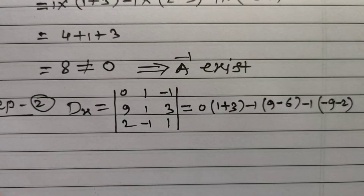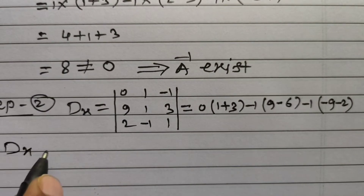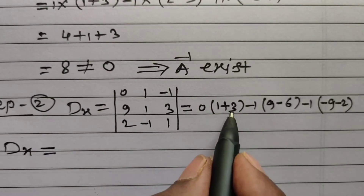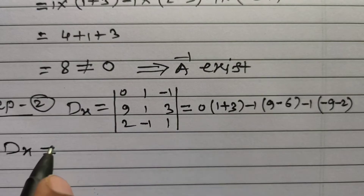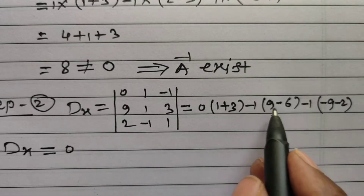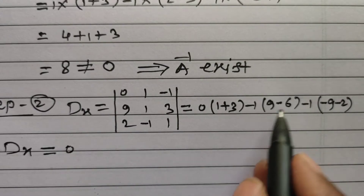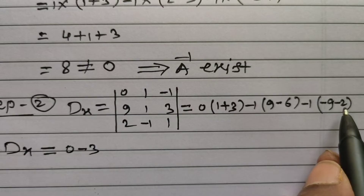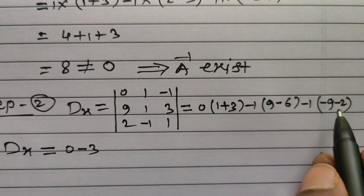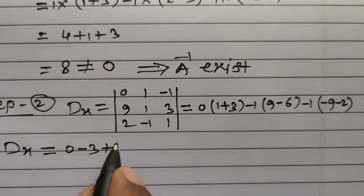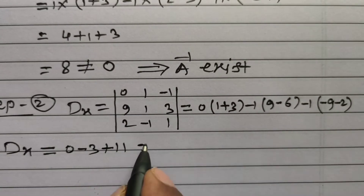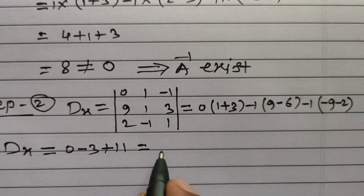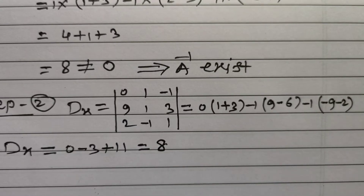Simplifying Dx: 0 times (1 plus 3) gives 0. Then minus 1 into (9 minus 6) equals minus 1 times 3 equals minus 3. Then minus 1 into (minus 9 minus 2) equals minus 1 times minus 11 equals plus 11. So Dx equals minus 3 plus 11, which is 8.